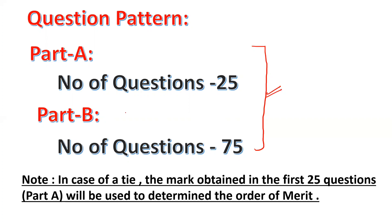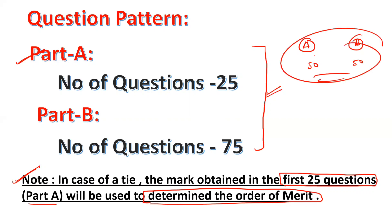Why are they separated into Part A and Part B? It's very important for tie-breaking. If students get the same marks, the marks obtained from the first 25 questions, which is Part A, will be used to determine the order of merit. For example, if two students both get 50 marks, how many questions they answered correctly in Part A will determine their merit ranking.